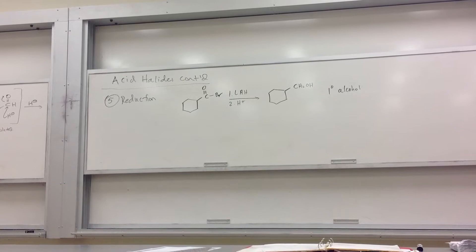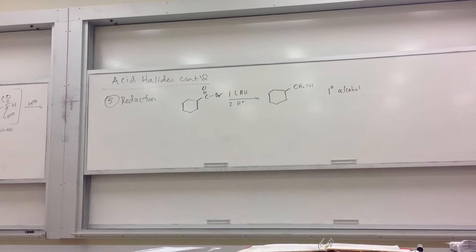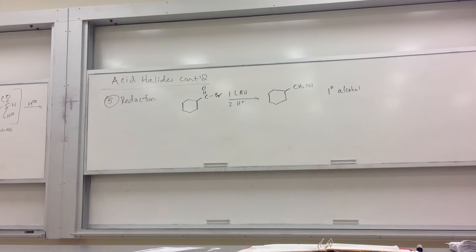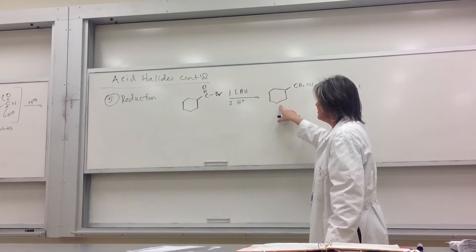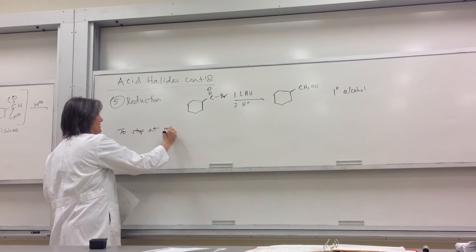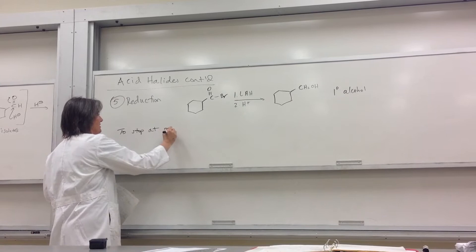We talked about a reagent that could stop at the aldehyde stage. A lot of times the alcohol is not what you want, because an aldehyde is more versatile — you can do Grignards, all kinds of things. You could go to the alcohol and then use PCC to get back to the aldehyde, but there's a reagent that will stop partway, at the aldehyde stage.